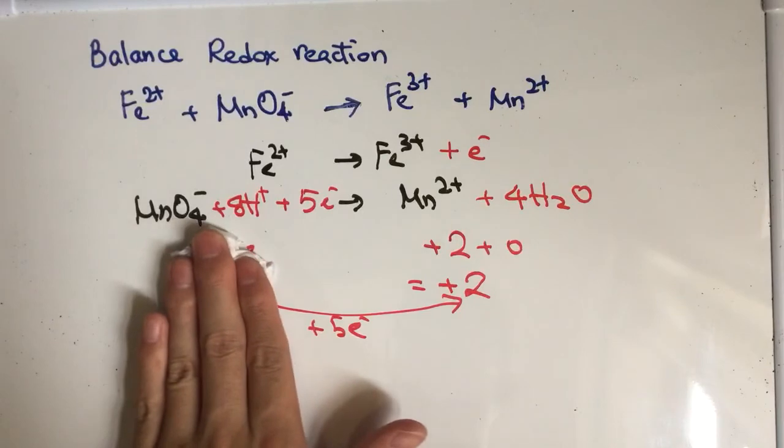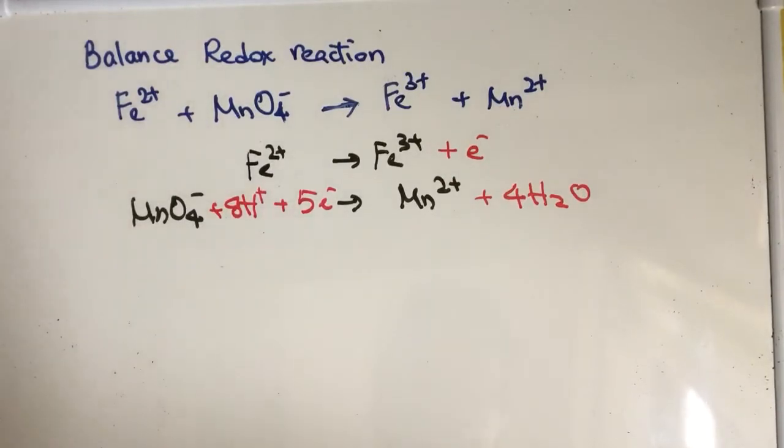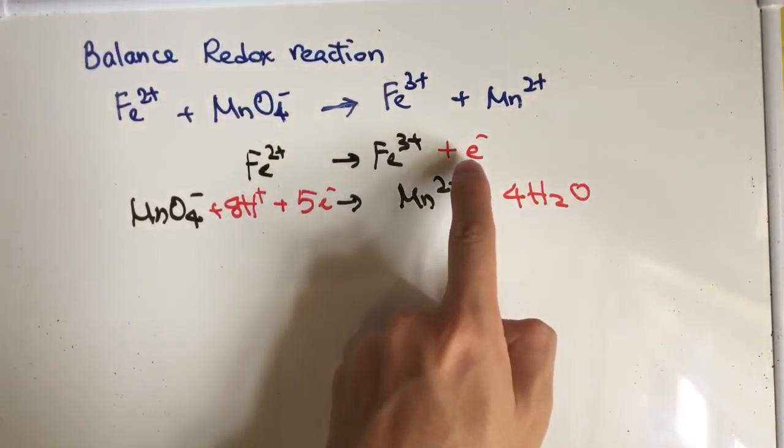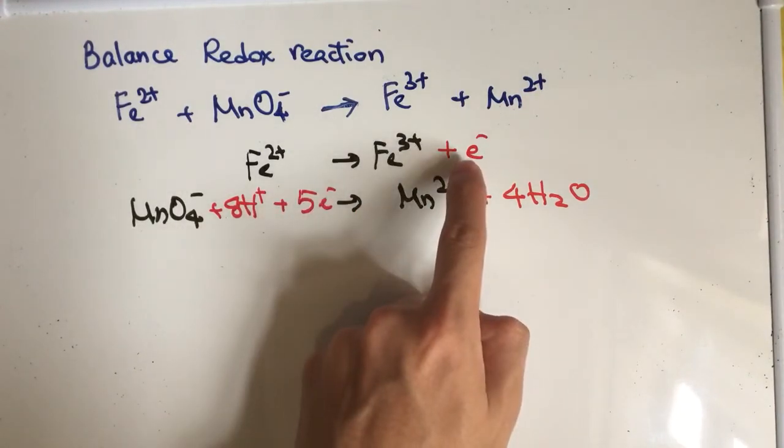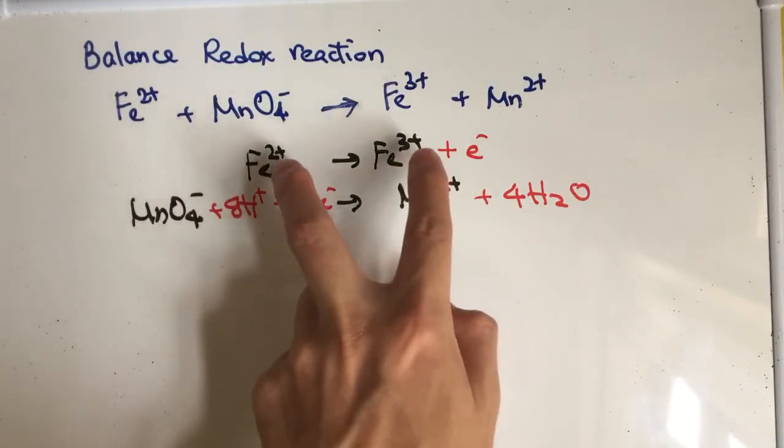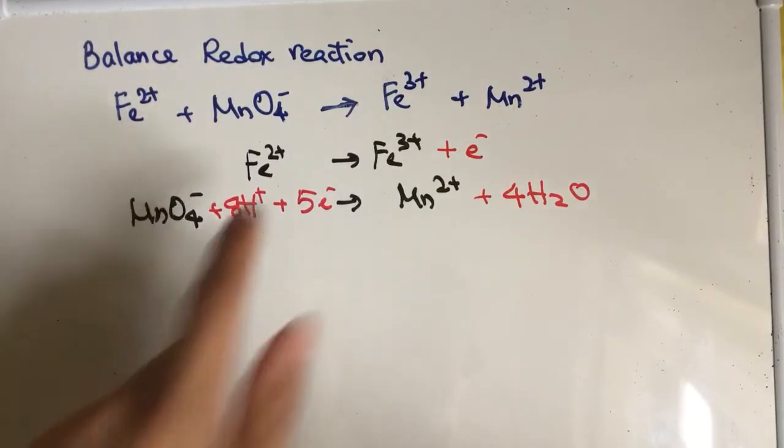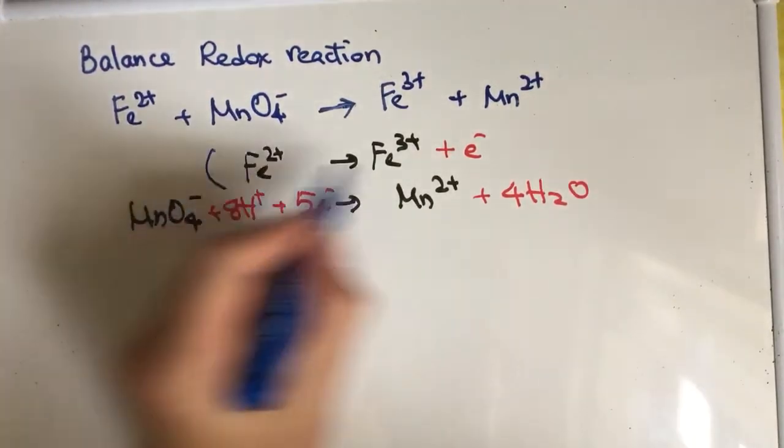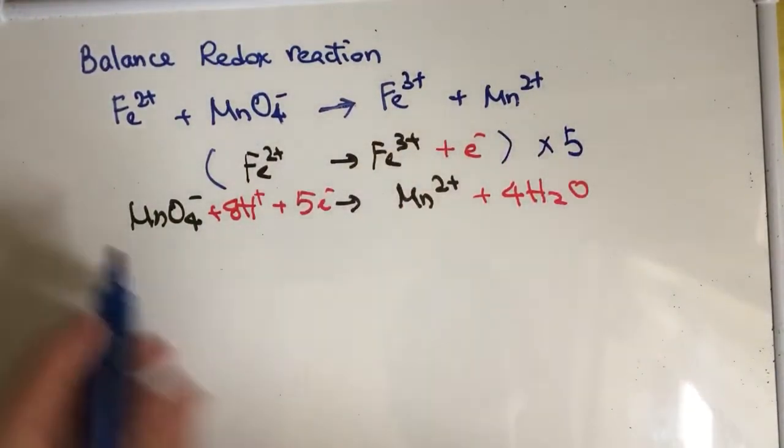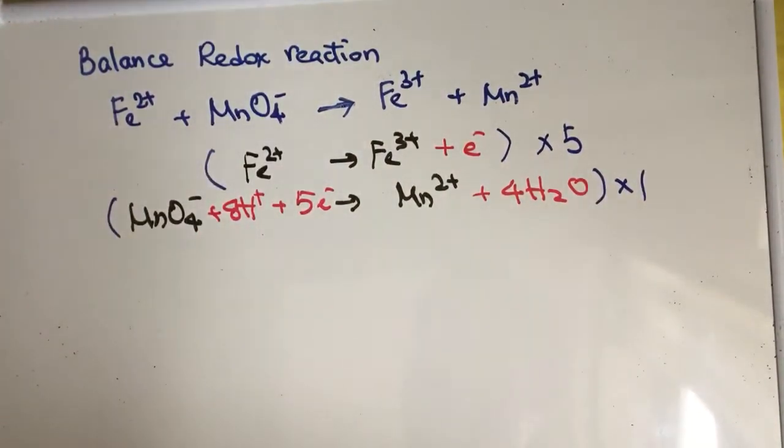And after we write down the two ionic half-equations, what we should do is we can combine them together. So how can we combine them together is that we have to make sure the number of electrons lost is equal to the number of electrons gained. To make this into five electrons, we can multiply the whole equation by five. So for the first equation here, times five. And the second equation, times one only. And then you rewrite and combine them.